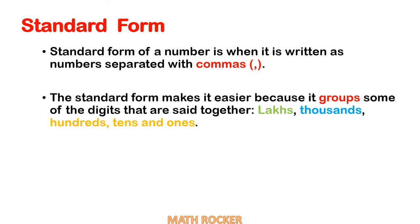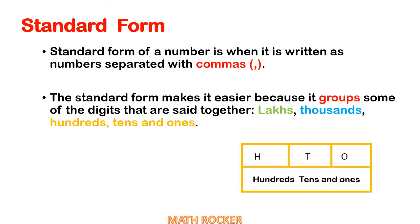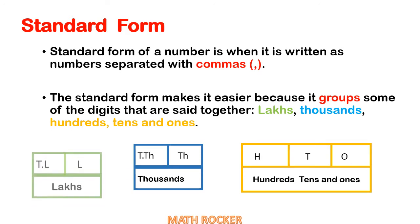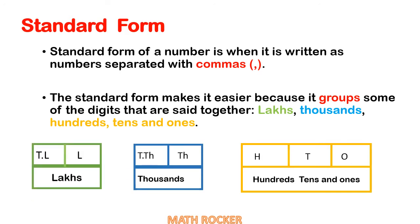The groups are: the lakhs group, thousands group, and hundreds-tens-ones group. Ten lakhs and lakhs come under the lakhs group; ten thousand and thousand come under the thousands group; hundreds, tens, ones come under the hundreds-tens-ones group. We have to put commas in between the lakhs and thousands group, and in between the thousands group and the hundreds-tens-ones group.